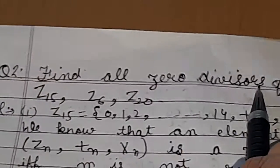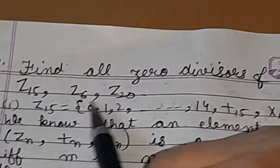Next question is find all the zero divisors of z15, z6, and z20.